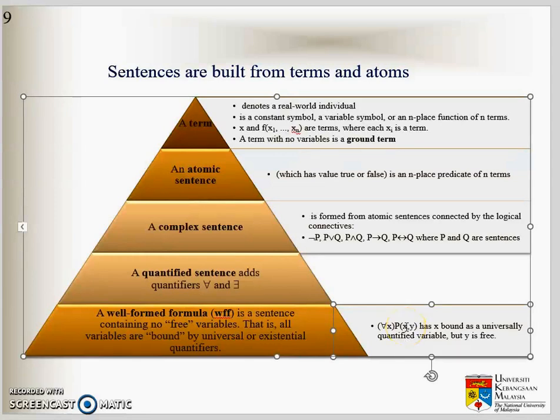As an example, say X is man, Y is woman, and P is marries. So we can say, this is every, for each, for every, universal, so for every. For every man, man likes woman. They bound the X and Y, but Y is free. Y is not every.